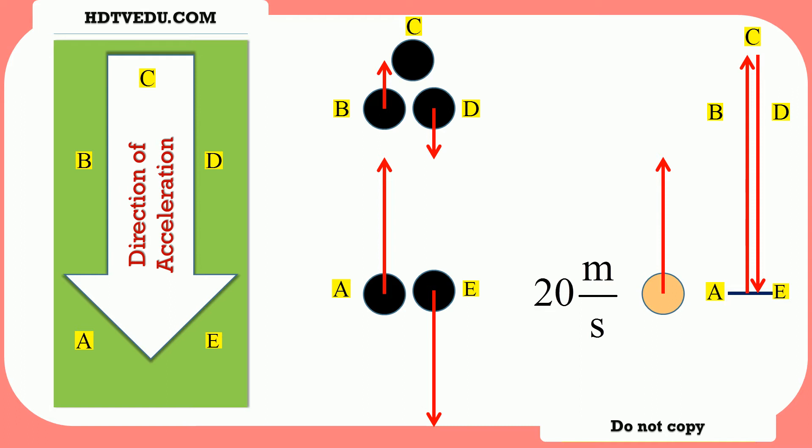From A to B, velocity is positive. From B to C, velocity is positive. At point C, velocity is zero. At point D, velocity is negative, because it is on its way down. At point E, velocity is again negative.